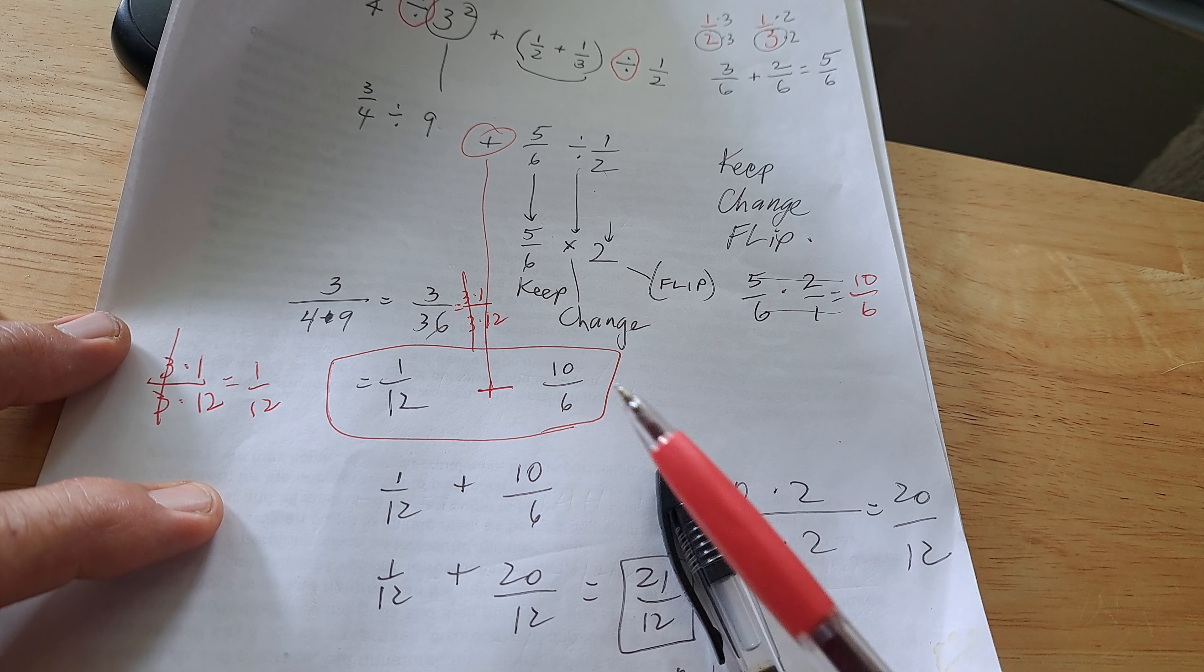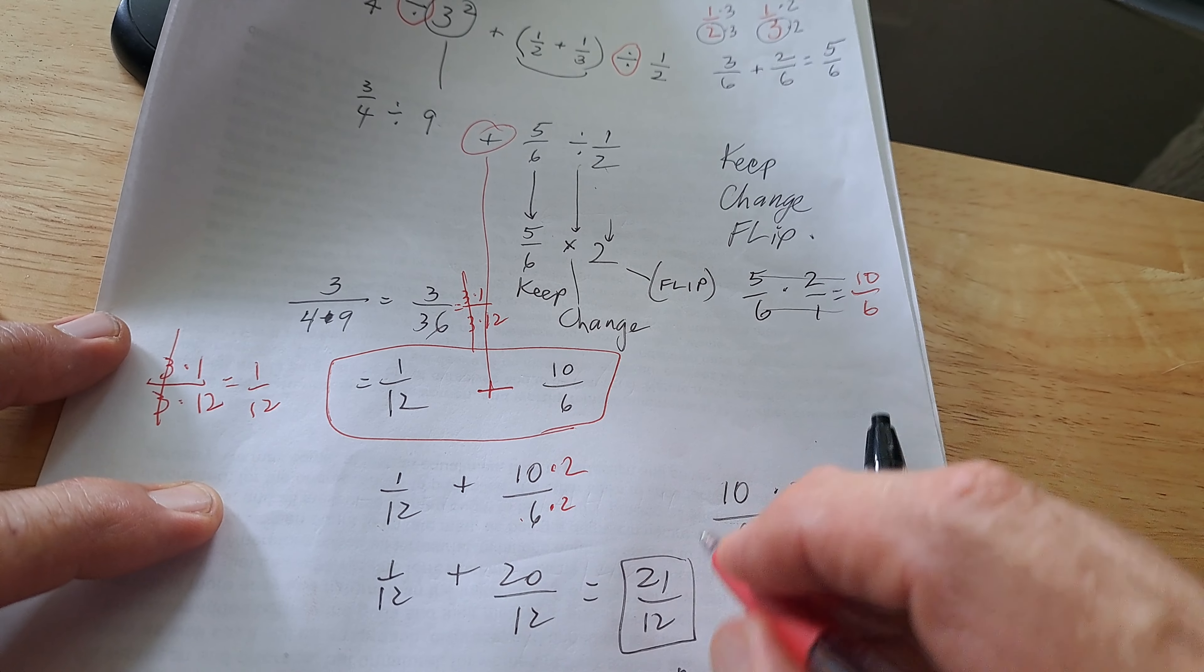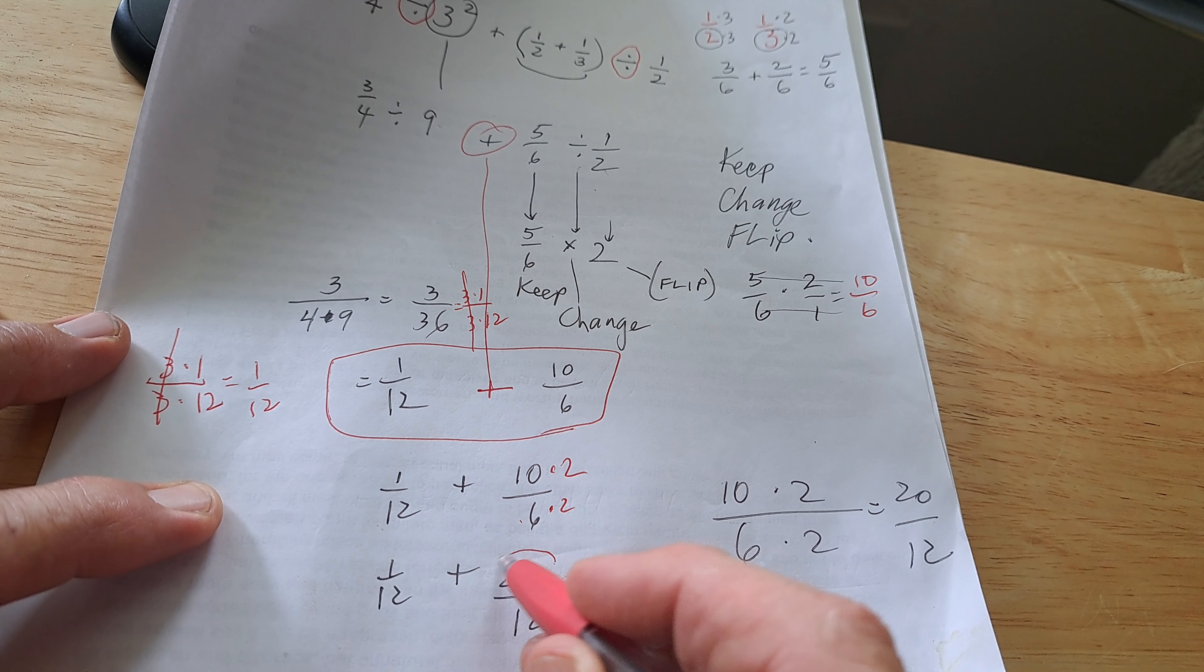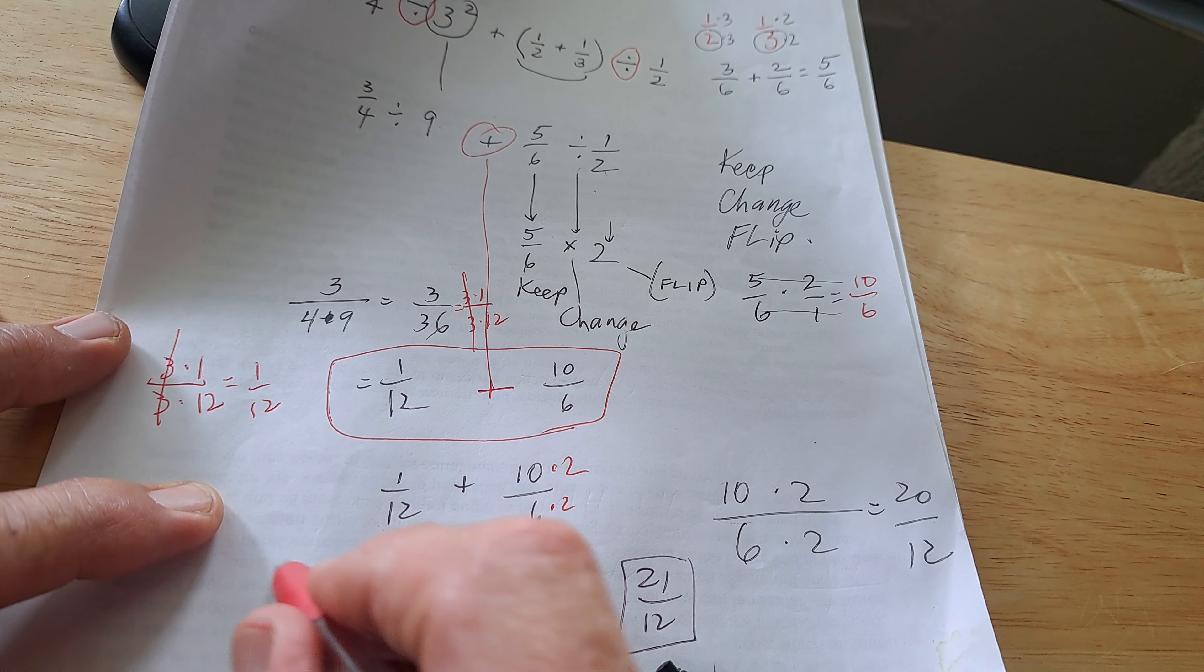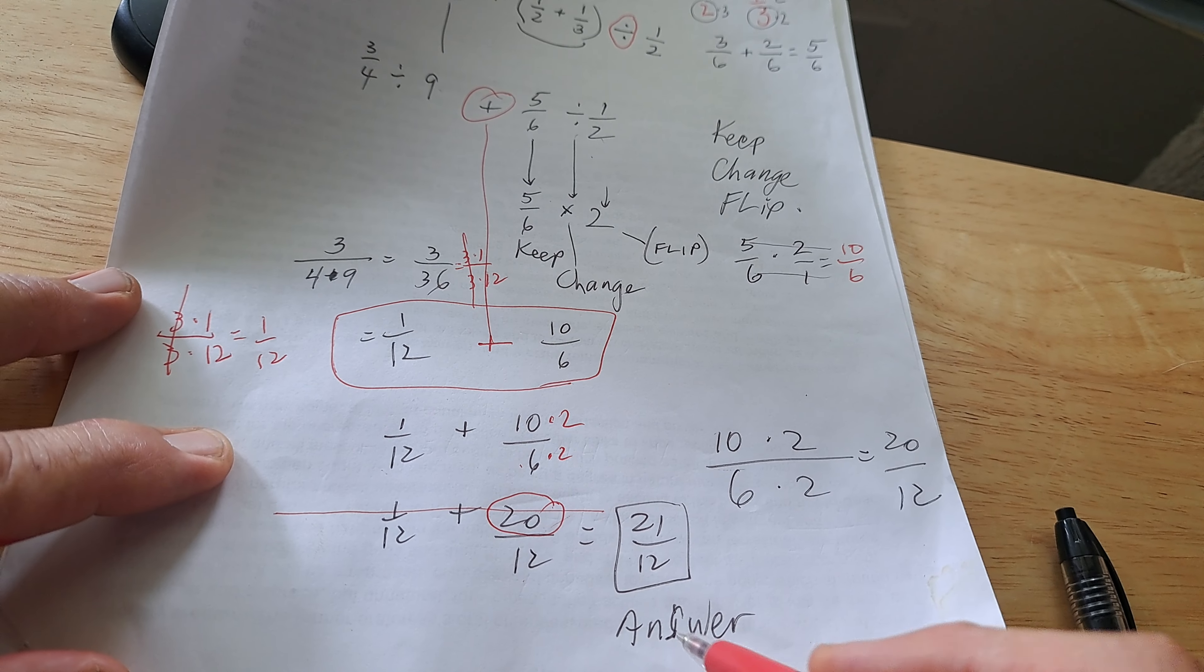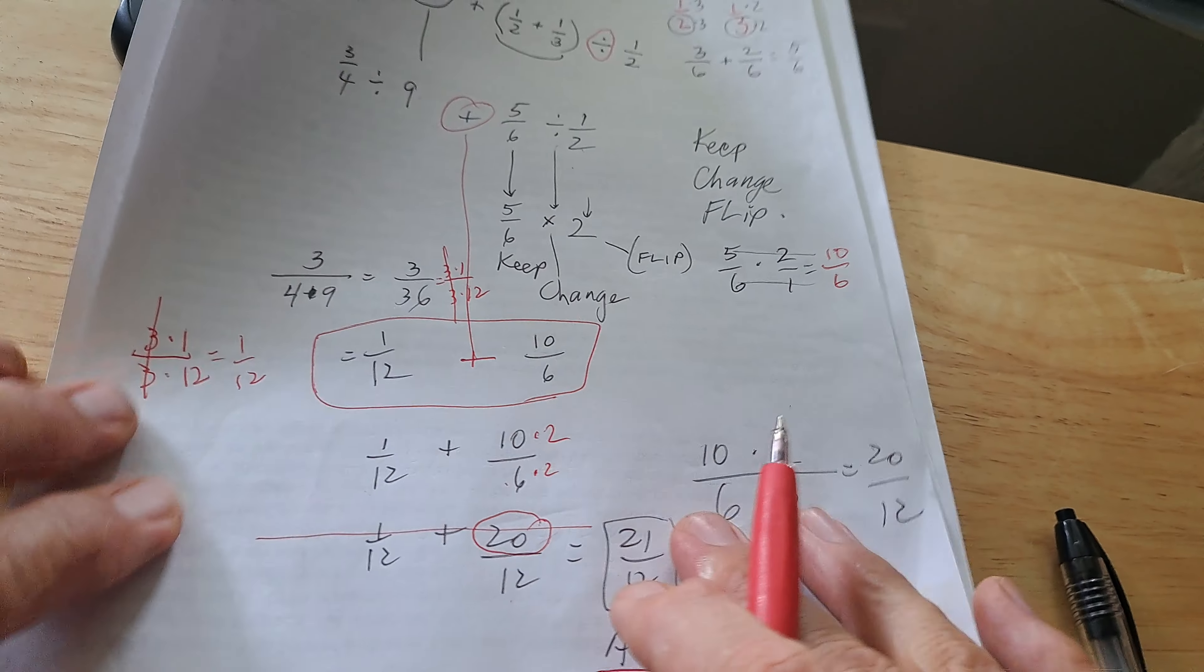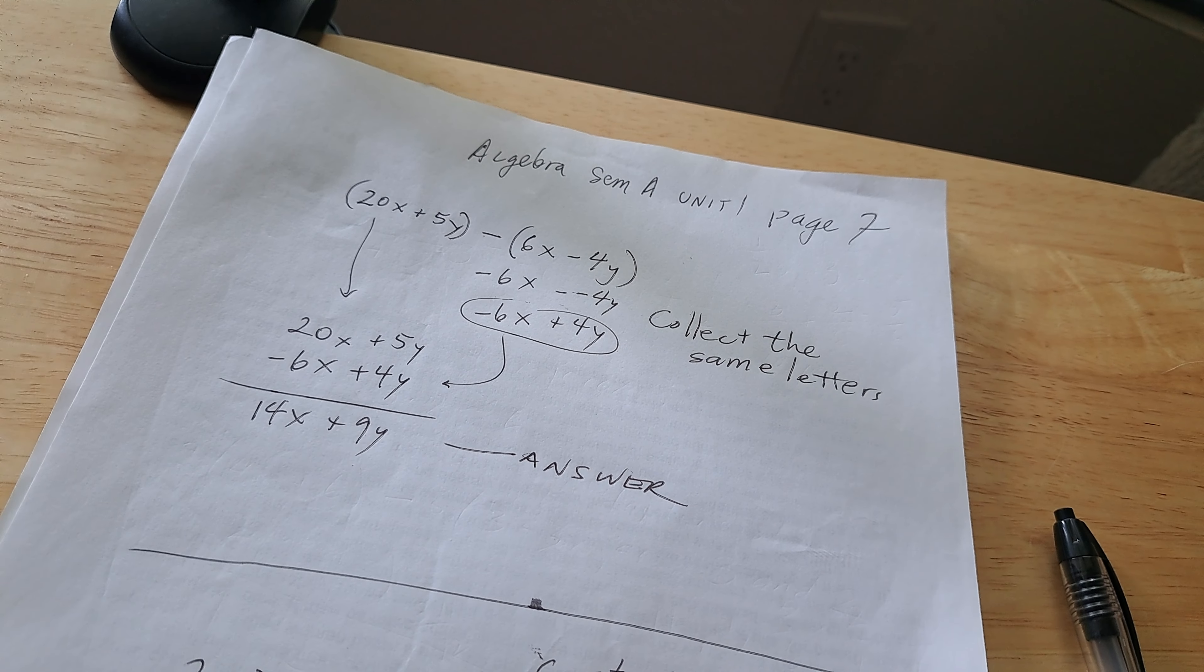Now we have to add 1/12 to 10 over 6. Oh my God, what do we do? I can turn 6 into 12. I multiply top and bottom by 2, so I get 20 over 12. And then once again, add straight across. I've got 21 over 12, and that's our answer.